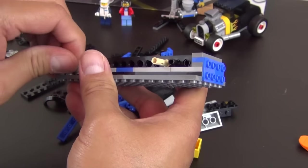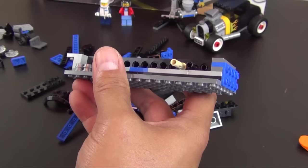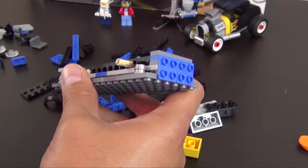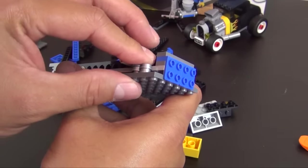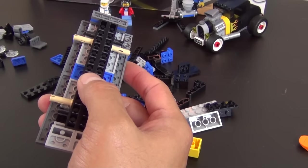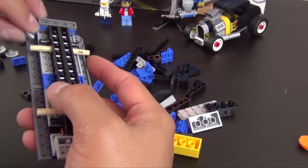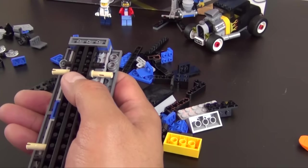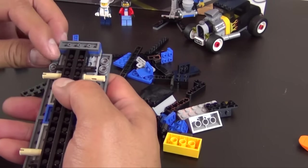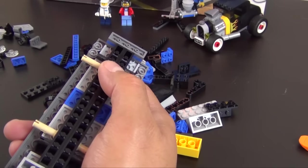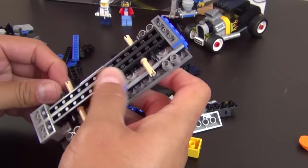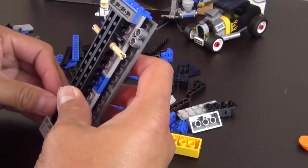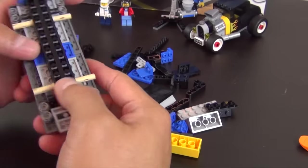All right, so we're going to do eight of these two by two or one by one studs stacked on top of each other. It's basically supposed to look like shock absorbers. A little tricky to get on but once you kind of find the little spot they're supposed to be on, they go in pretty easily.